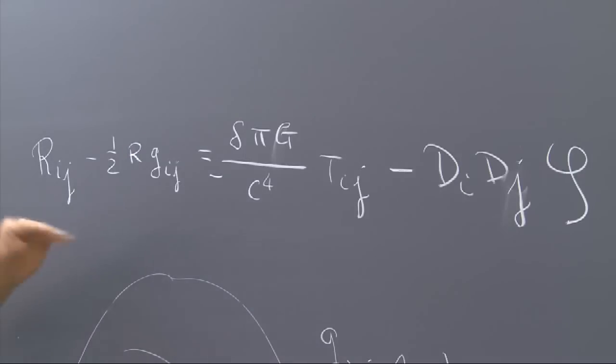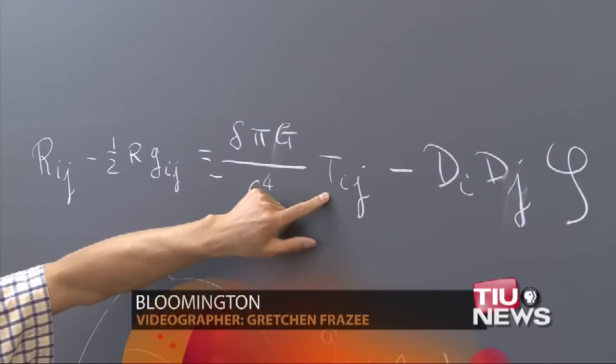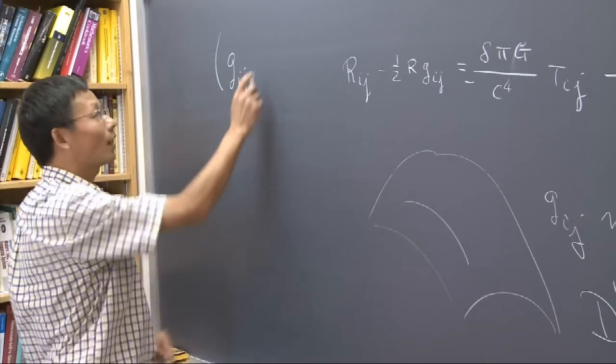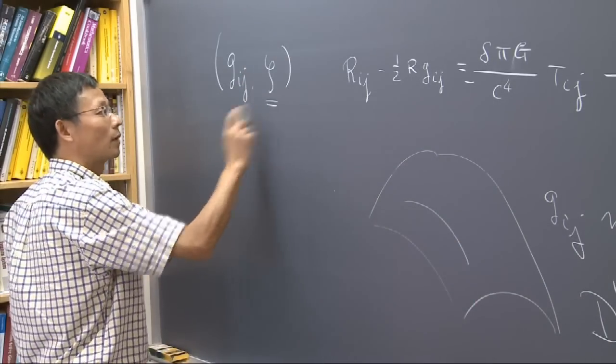WTIU's Stan Jastrzewski has more. Professor Shohung Wang boldly went where many had gone before, to an equation Albert Einstein created in the early part of the 20th century to explain how matter and energy coexist.